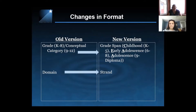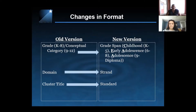We then look at the old domain categories, which are now considered our strand categories. We have four strands in our new updated standards. The old cluster titles are now what we consider our standards for this new version of our Maine Learning Results — a change from the old version, as those were statements that were often overlooked. They are now our overarching standards.